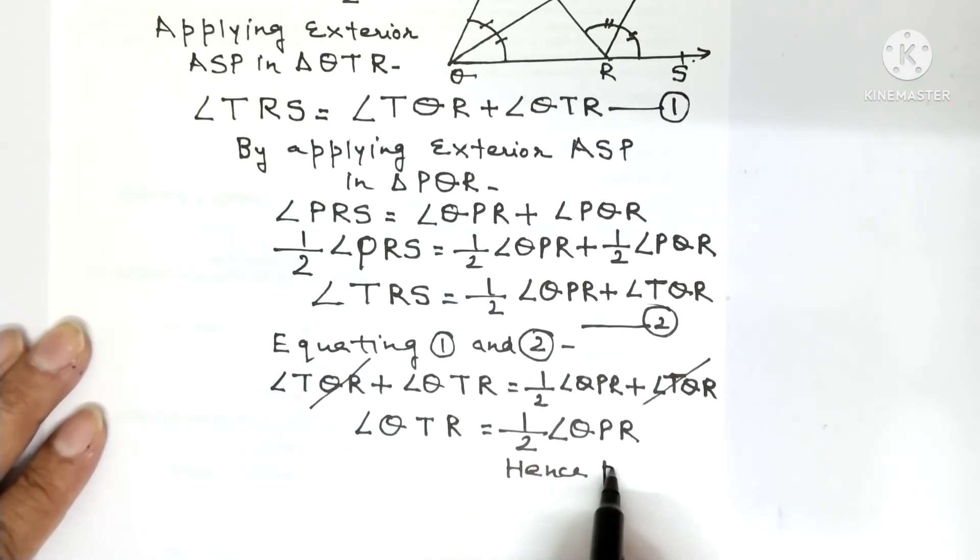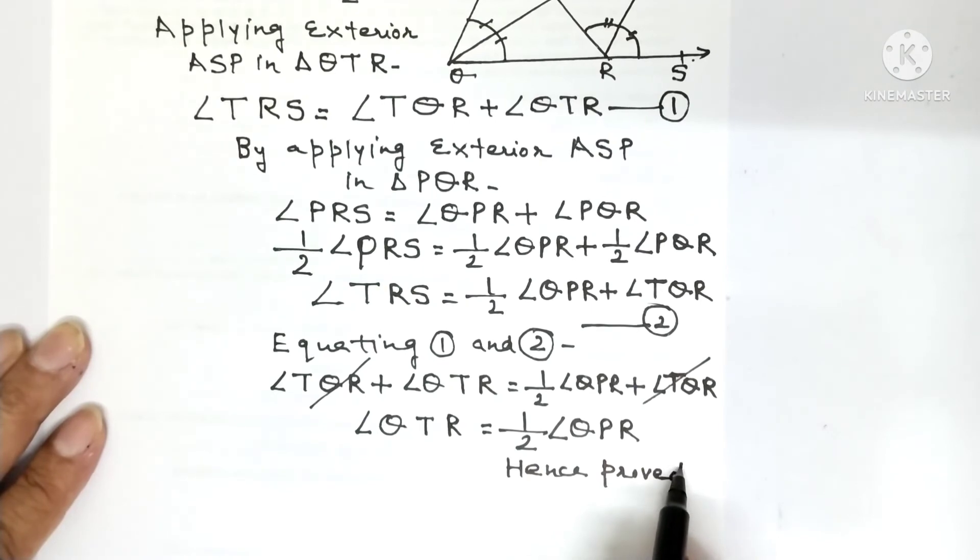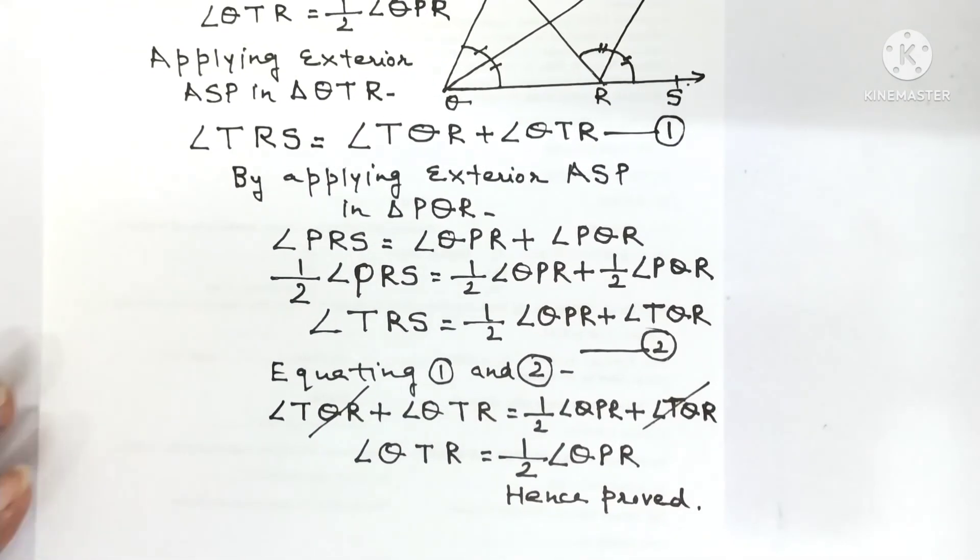So how to remember this question - in this question the exterior angle sum property was used two times, and then the equations were equated. So this was the solution. If you liked this, thank you.